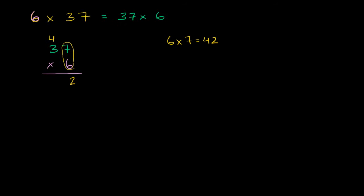Now we need to think about what 6 times 3 is. Well, we know 6 times 3 is equal to 18. But we can't just write an 18 down here. We still have this 4 to deal with. So 6 times 3 is 18, but we've got to then add the 4. So 6 times 3 is 18, plus 4 is 22.